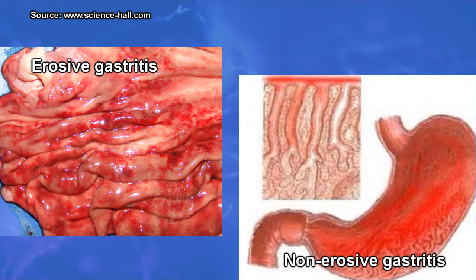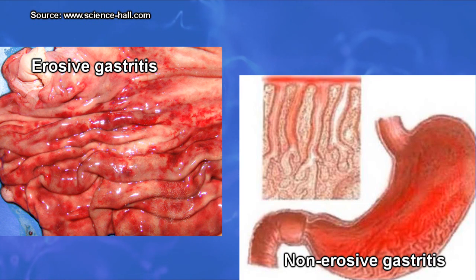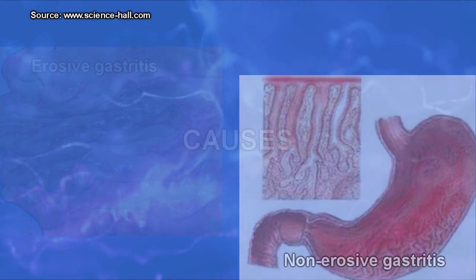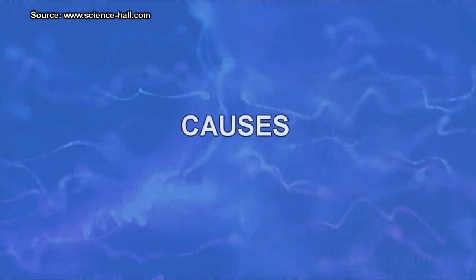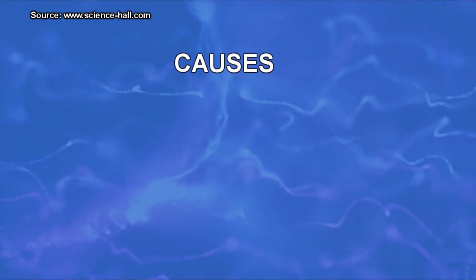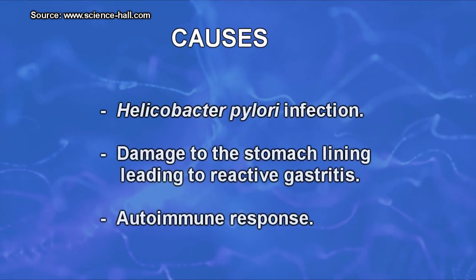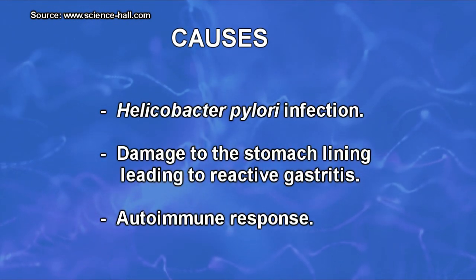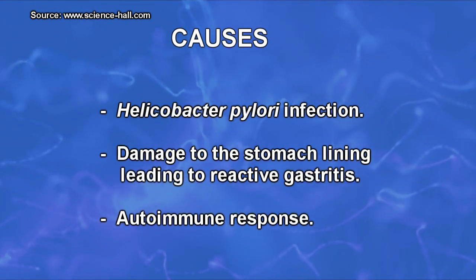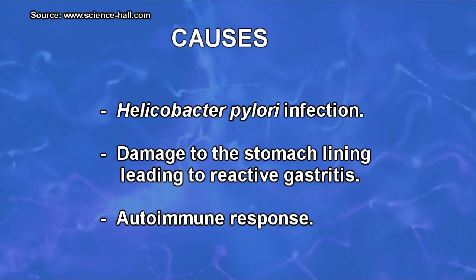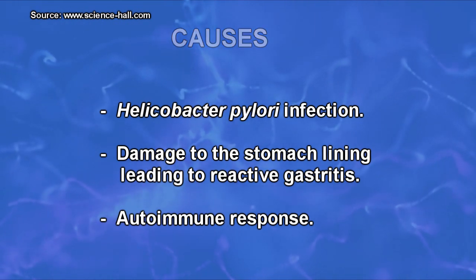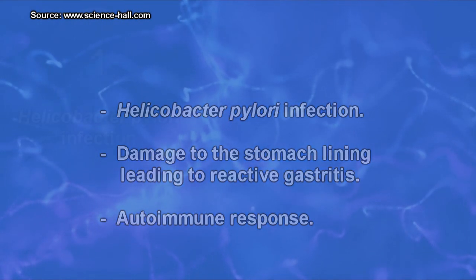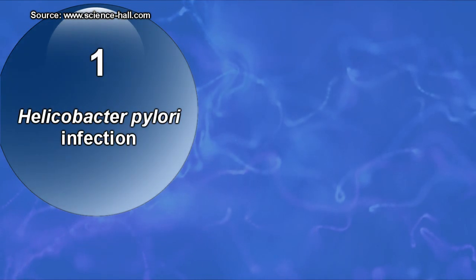In non-erosive gastritis, there is inflammation in the lining of the stomach, but there are no erosions or ulcers. The most common causes of gastritis include Helicobacter pylori infection, damage to the stomach lining leading to reactive gastritis, and an autoimmune response.